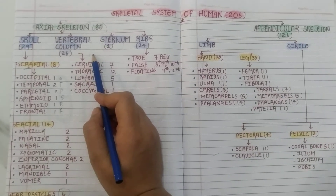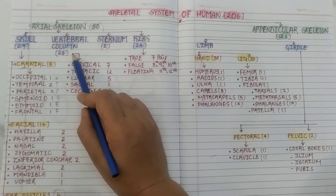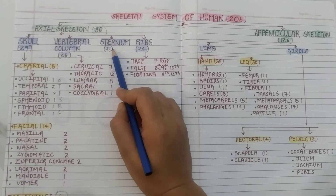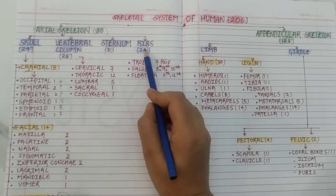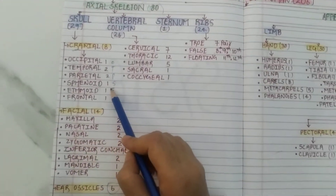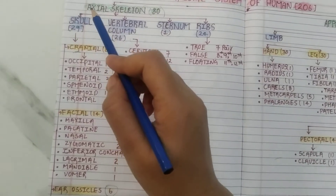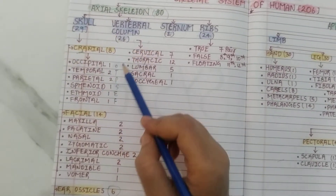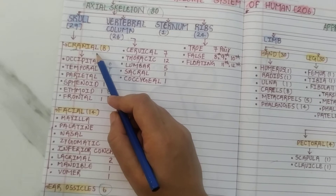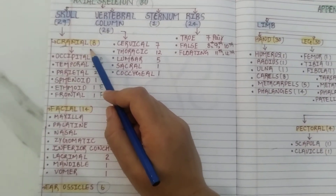The axial skeletal system includes the bones along the axis of our body. The skull has 29 bones, the vertebral column has 26 bones, the sternum has 1 bone, and the ribs consist of 12 pairs — that is 24 bones. I further classify the skull bones, which total 29.